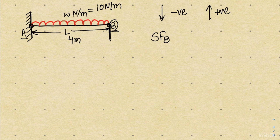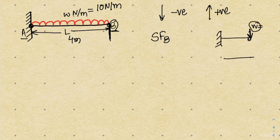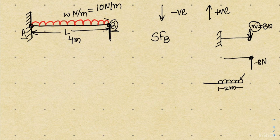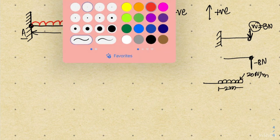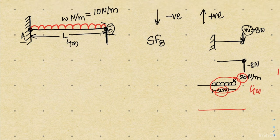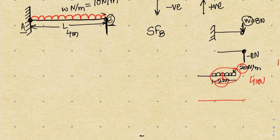For a simple point load, the shear force at the point itself equals the load — for example, if the load is 8 newton, the shear force is minus 8 newton. However, for a uniformly distributed load, we calculate the total load by multiplying the intensity by the distance. For example, a UDL of 20 newton per meter over a 2-meter span gives a total load of 40 newton, acting at the center of that length.